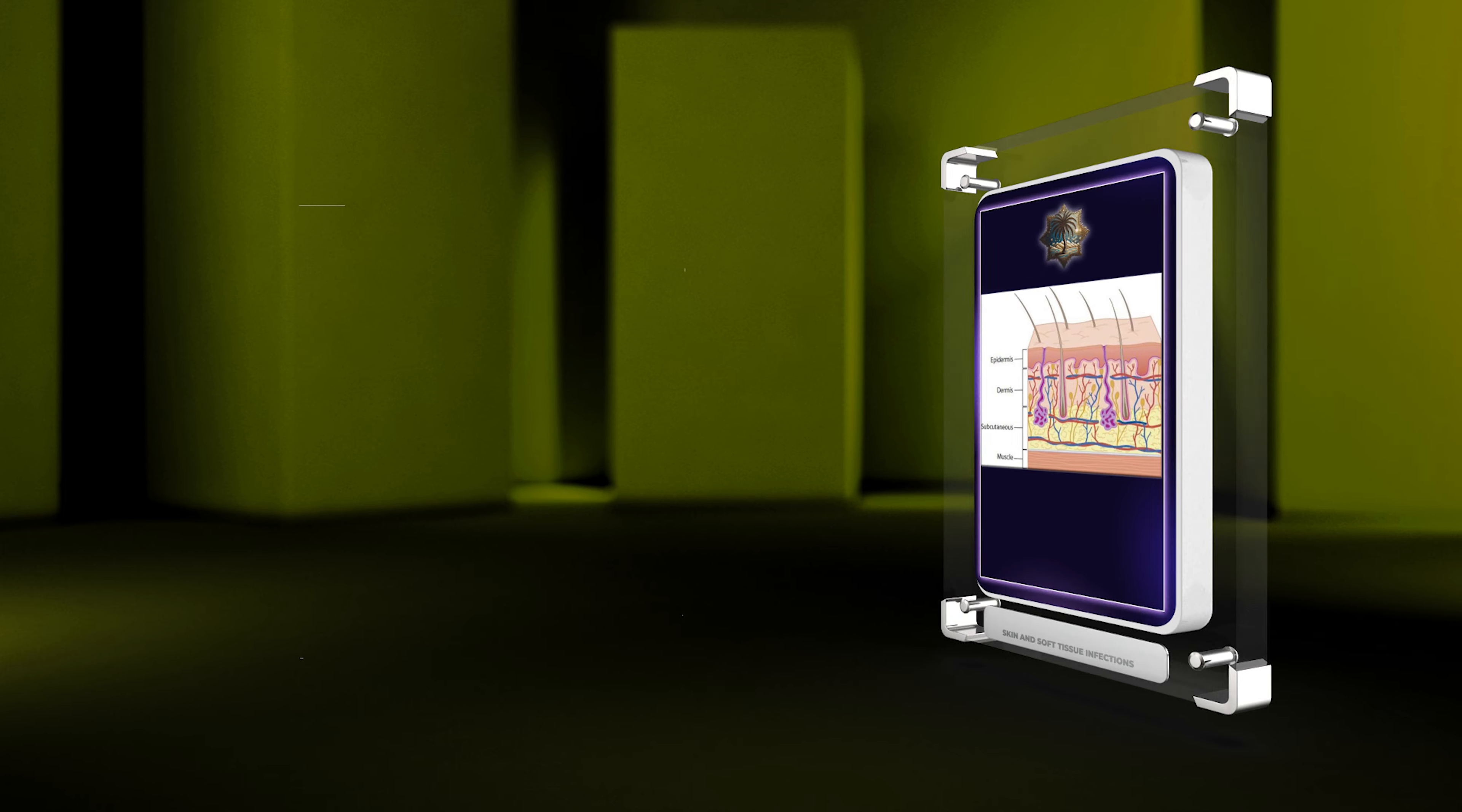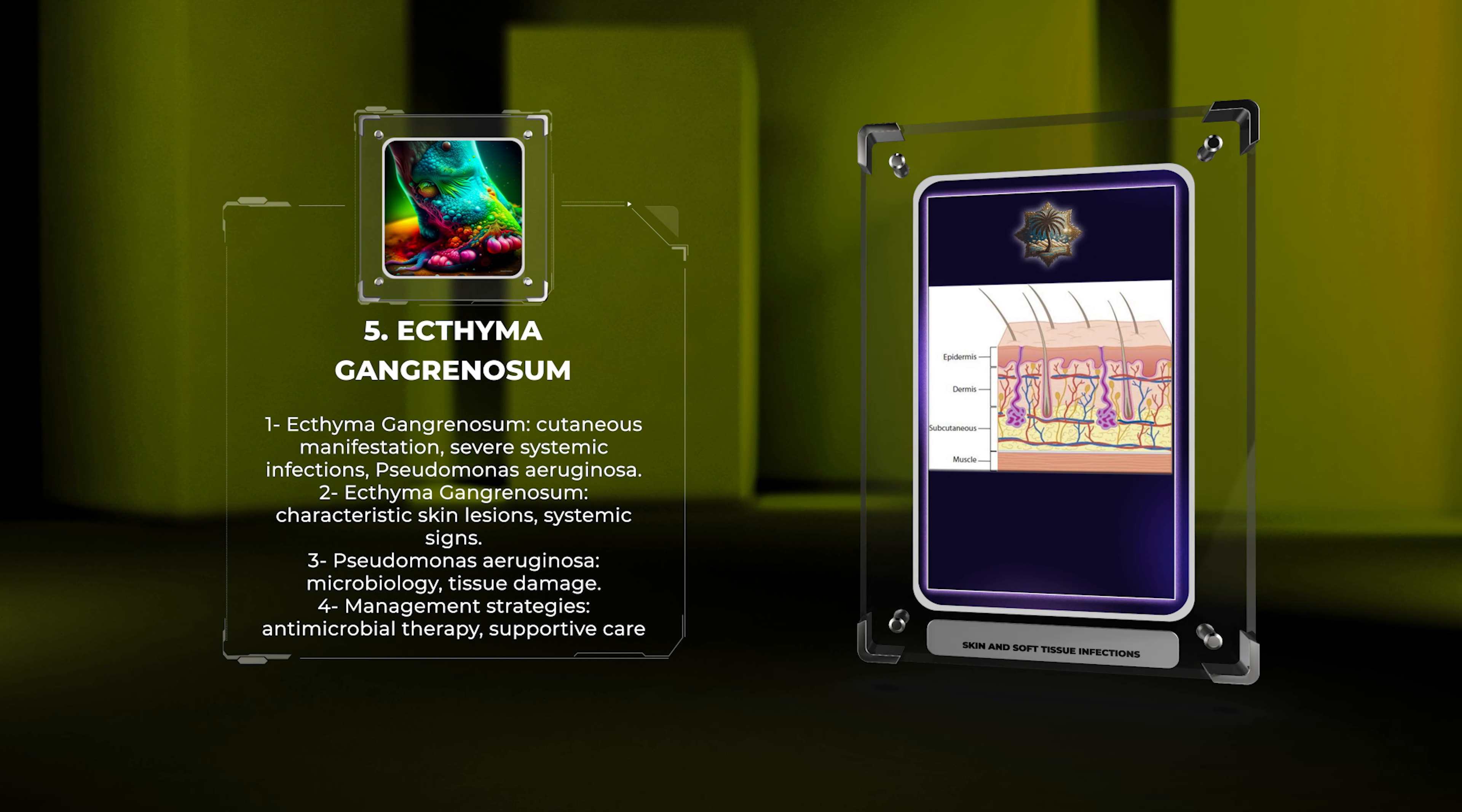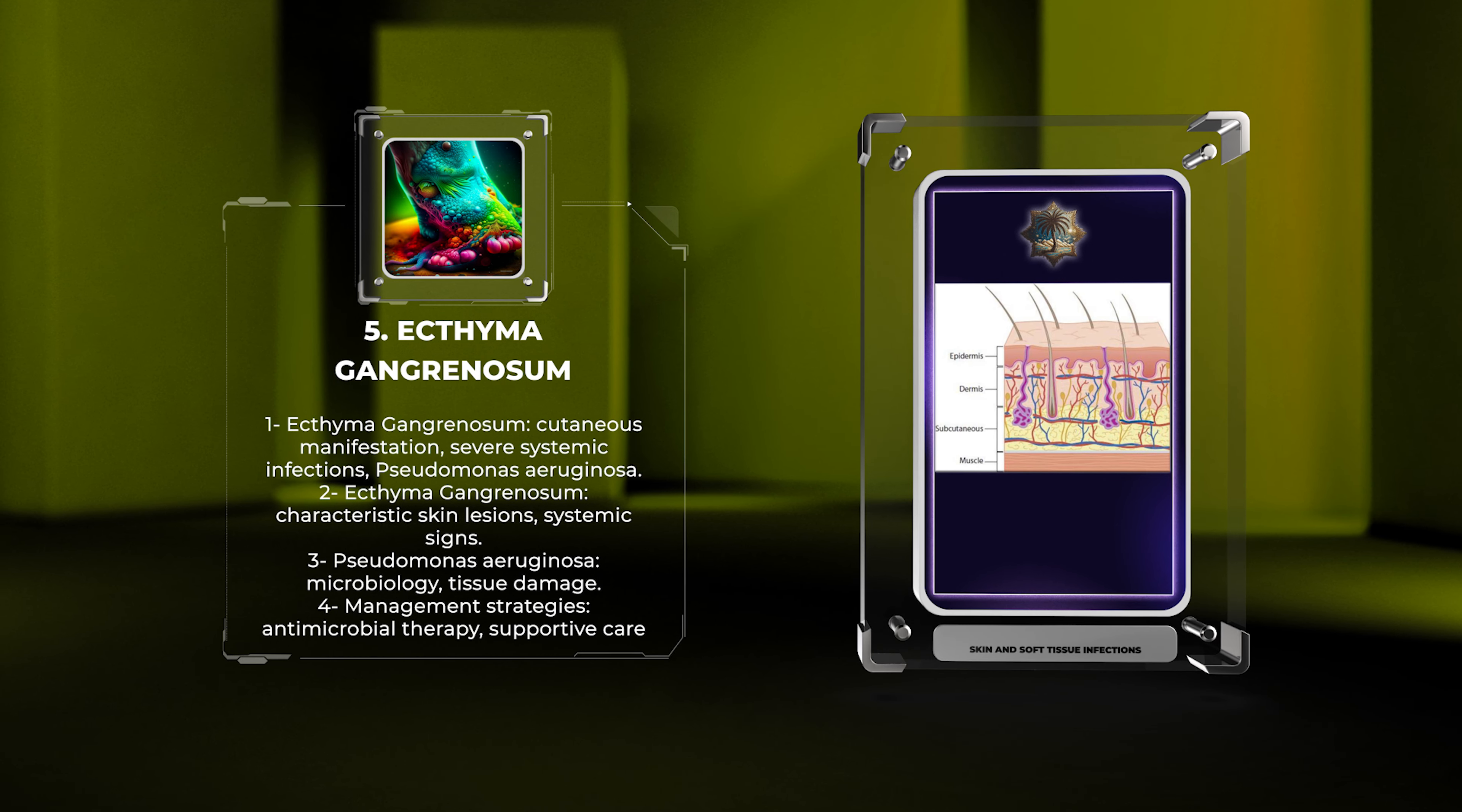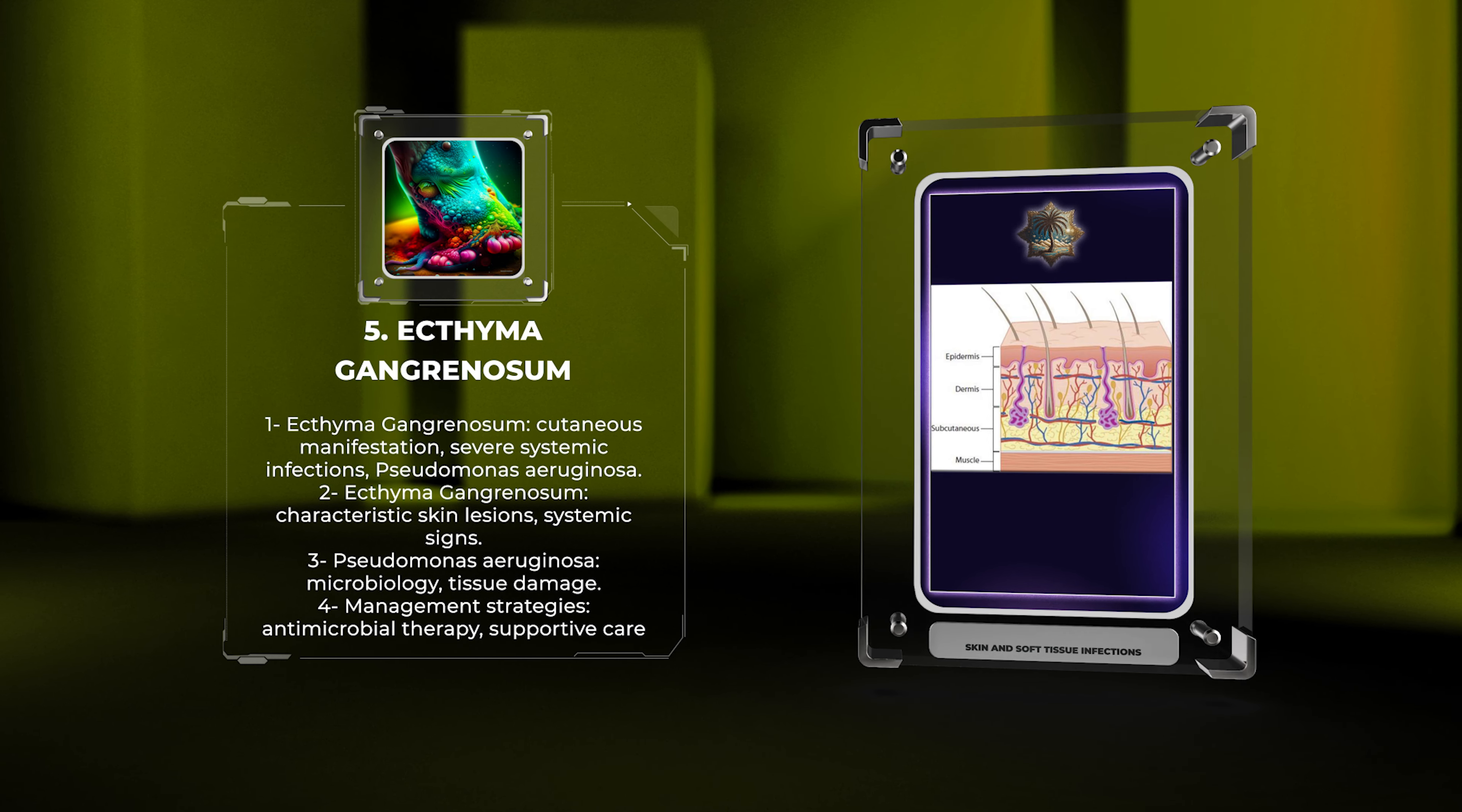Ecthema gangrenosum is a cutaneous manifestation commonly associated with severe systemic infections, most frequently caused by Pseudomonas aeruginosa. In this topic, we will delve into the unique presentation of Ecthema gangrenosum, discussing the characteristic skin lesions and associated systemic signs.